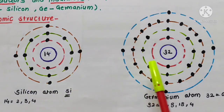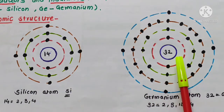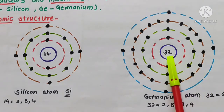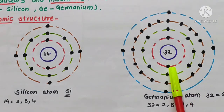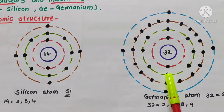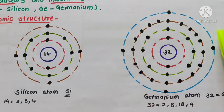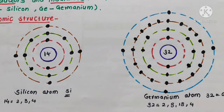While in germanium atom, it has atomic number 32. So in the first orbit 2, second orbit 8 electrons, in the third orbit 18 electrons, and in the fourth, last orbit, there are 4 electrons.